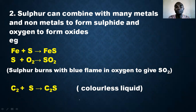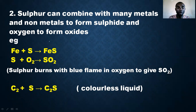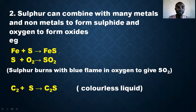Sulfur can combine with many metals and non-metals — it forms sulfides with metals and oxides with oxygen. For example, sulfur reacts with iron to form iron(II) sulfide. It can react with oxygen, and sulfur burns with a blue flame in oxygen to give sulfur dioxide (SO₂).